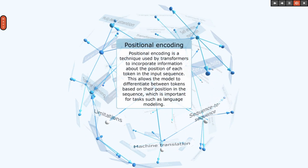Positional encoding is a technique used by transformers to incorporate information about the position of each token in the input sequence. This allows the model to differentiate between tokens based on their position in the sequence, which is important for tasks such as language modeling.